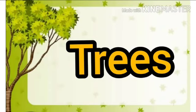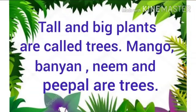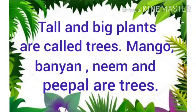First of all, we will discuss about trees. Tall and big plants are called trees. Mango, banyan, neem, and peepal are trees. Trees are tall and big in size. These are strong plants. They live for many years. The examples of trees are mango, banyan, neem, peepal, etc.